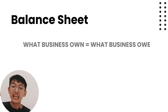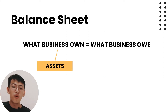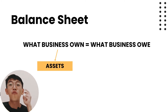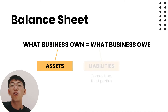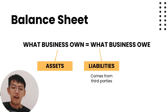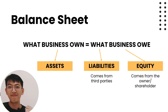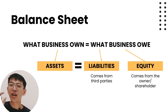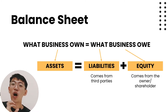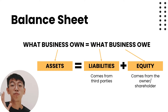What a business owns is called assets. What a business owes consists of two types: if it comes from a third party such as a bank, we call it liabilities; if it comes from the owner, we call it equity. That's why the accounting equation states that assets — what a business owns — equals liabilities and equity — what a business owes. So business assets have to be balanced with liabilities and equity.